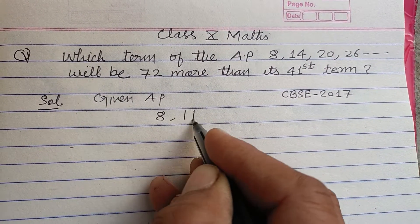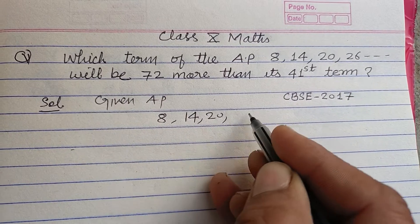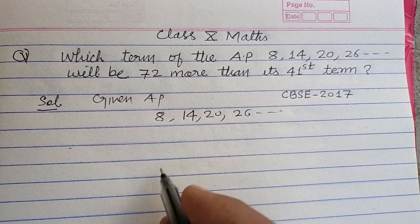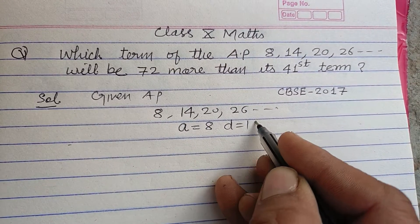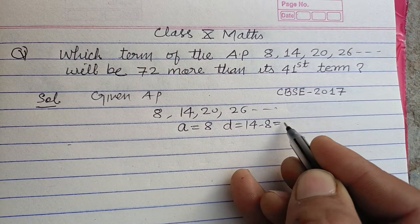The given AP is 8, 14, 20, 26, and so on. Its first term a is 8, and the common difference d is 14 minus 8, which is 6.